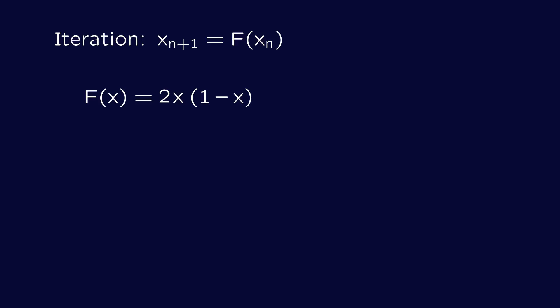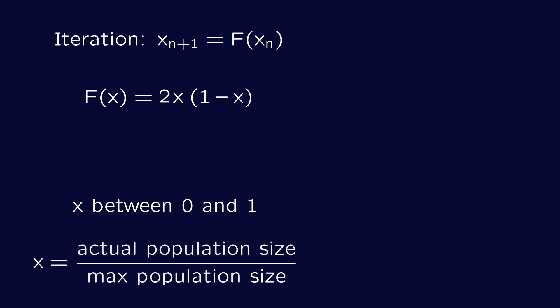Although here x is not the number of butterflies, but rather a number between 0 and 1, representing the fraction of the maximum conceivable number of butterflies that is currently present. The closer x gets to its maximum value of 1, the closer to 0 the factor 1 minus x becomes. So this update function is indeed such that a large population size one year will be followed by a small population size the next.